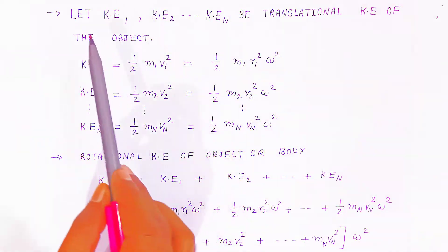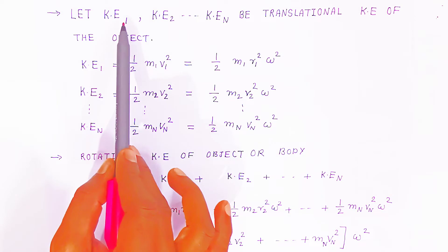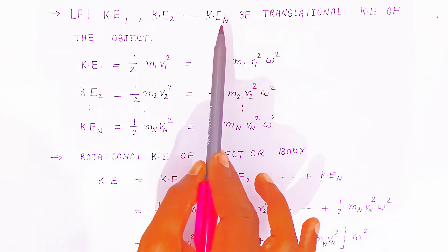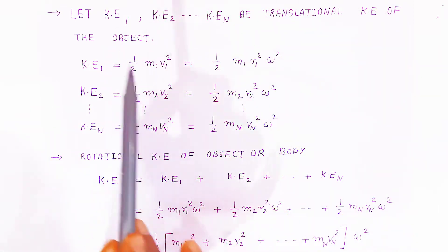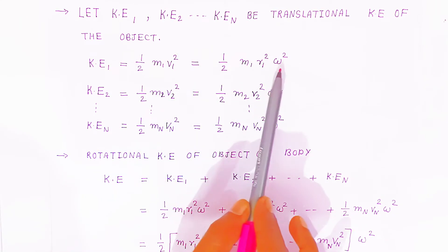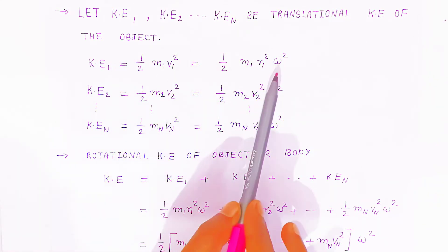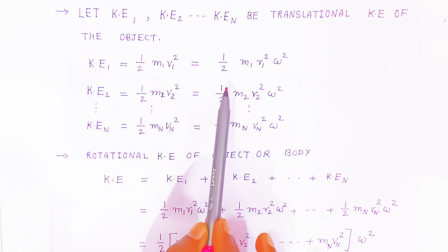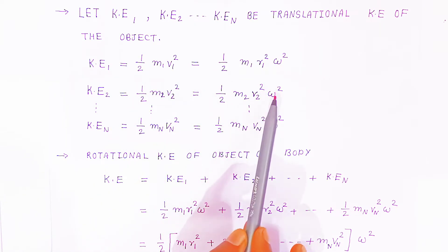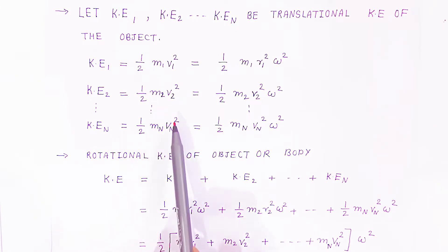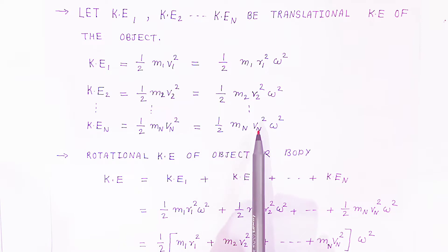Now we are going to find kinetic energy. Let KE1 be the kinetic energy of the first particle, KE2 of the second particle, and KEn of the nth particle, all performing translational kinetic energy. Kinetic energy of the first particle equals half m1 v1 squared. Substituting v1 = r1·omega, we get half m1 r1 squared omega squared. Kinetic energy of the second particle equals half m2 v2 squared, that is half m2 r2 squared omega squared. Similarly, kinetic energy of the nth particle equals half mn vn squared, which equals half mn rn squared omega squared.